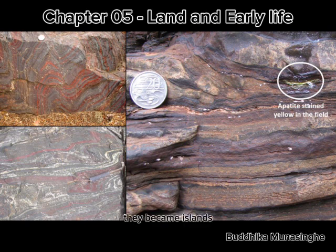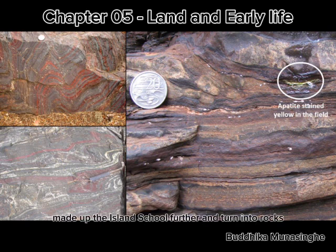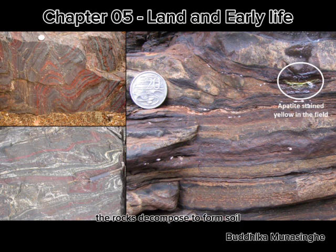They became islands. The elements and compounds that made up the islands cooled further and turned into rocks. The rocks decomposed to form soil. In this way, the land was created due to the islands that emerged all over the ocean.